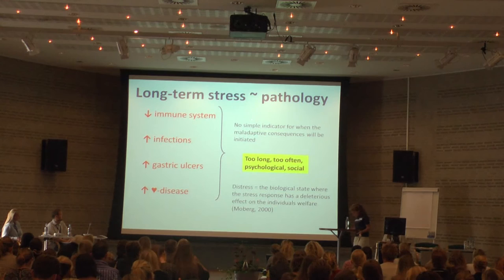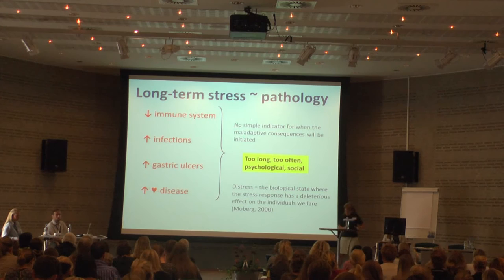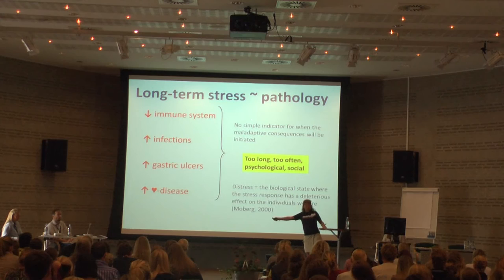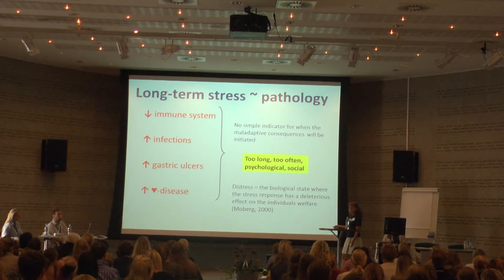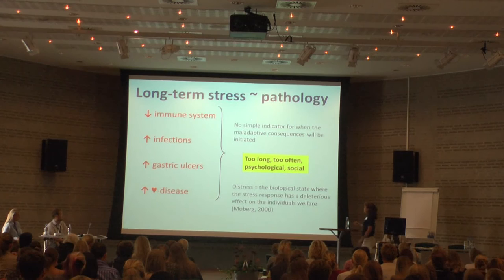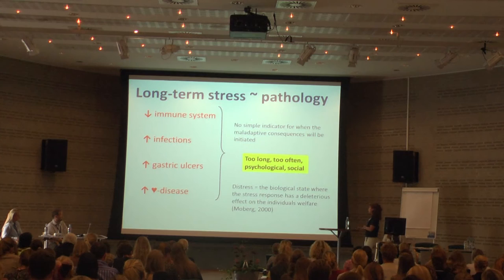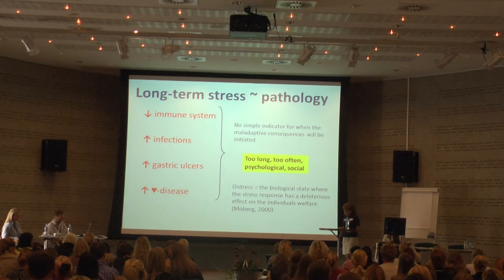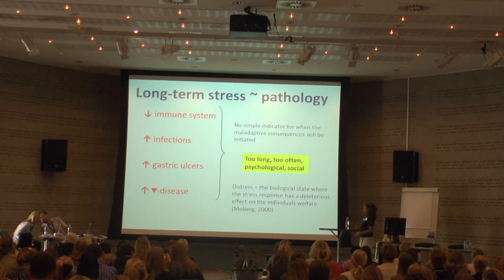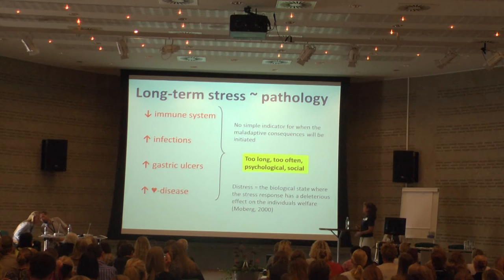Within the study of animal welfare, some people have found it difficult with the stress definition spanning from a slight adaptation all the way to something very severe that can almost kill you. Therefore Gary Moberg suggested that we should use the term distress as a characterization of the biological state where the stress response has a deleterious effect on the individual's welfare. That is one way of trying to clarify the language of stress we are using. It is not necessary to use this term, but some people find it helpful.